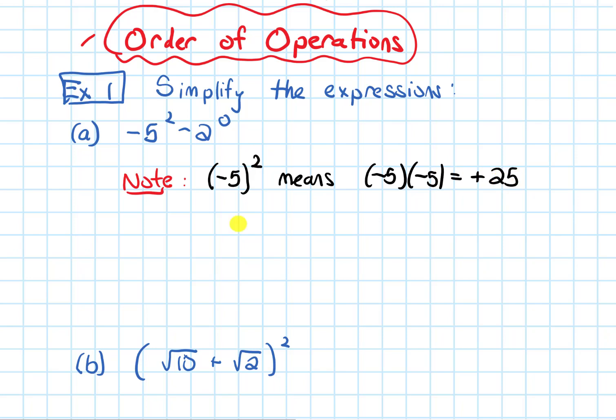But if I just have negative 5, no parentheses, and then that is being squared, this means do the exponent first, so it's going to be 5 that's being squared, and then put a negative in front of that whole thing. So this is negative times 5 times 5, which is negative 25.